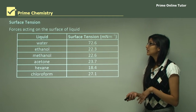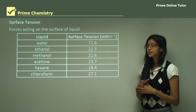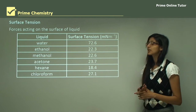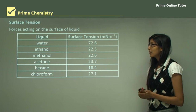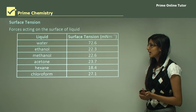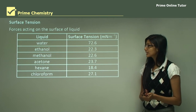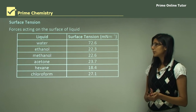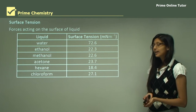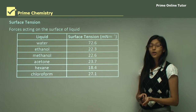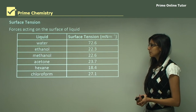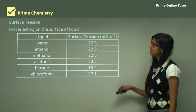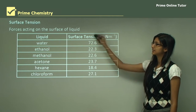Now let's look at the surface tension of different types of liquid. Water has a surface tension of 72.6, whereas ethanol has 22.3, methanol has 22.6, acetone has 23.7, hexane has 18.4, and chloroform has 27.1. From all of this you can see that water has the highest surface tension.